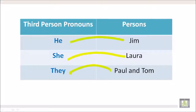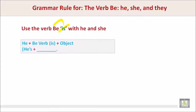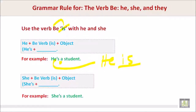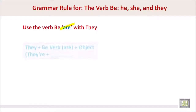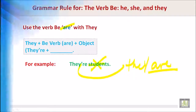Use the verb 'is' with he and she. He plus the verb 'is' plus the object — he's a student. So 'a' is not the verb; 'is' is the verb. She plus the verb 'is' plus the object — she's a student. Use the verb 'are' with they. They plus the verb 'are' plus the object — they're students. 'Are' is the verb.